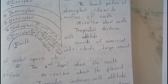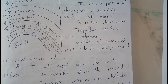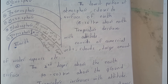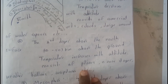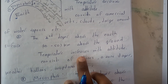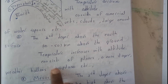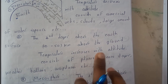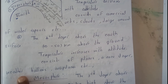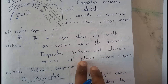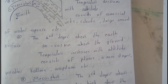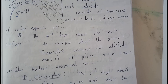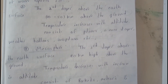Now let's go through stratosphere. Stratosphere is the second layer, which is 10 to 50 kilometers above the ground level. Here, temperature increases with altitude. It consists of planes, the ozone layer — remember the ozone layer — and weather balloons and aeroplanes fly in the stratosphere.